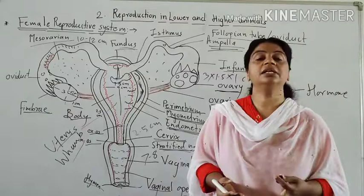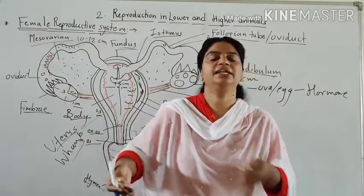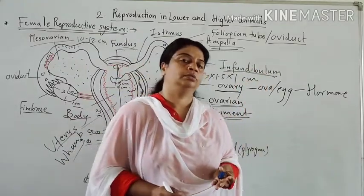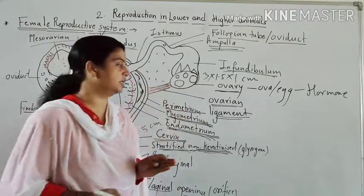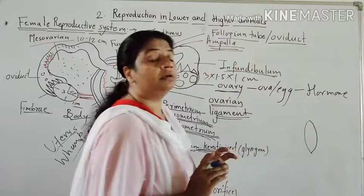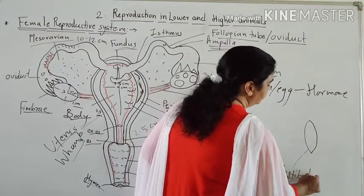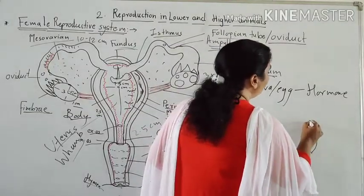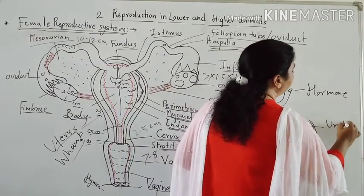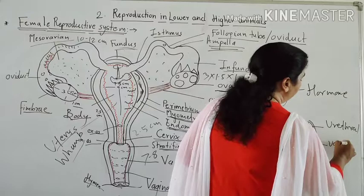Now we will see the external genitalia of the female reproductive system. The external genitalia is called the vulva. The vestibule is a deep depression in the external genitalia. This depression has two openings: on the anterior side is the urethral opening, and on the posterior side, below the urethra, is the vaginal opening or vaginal orifice.